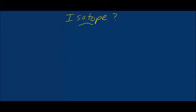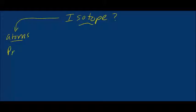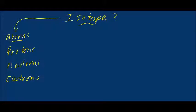Let's go back to what you probably learned around the eighth grade about atoms. An atom is basically the building block of matter in the universe. Atoms are made up of basically three particles, and those particles are protons, neutrons, and electrons.